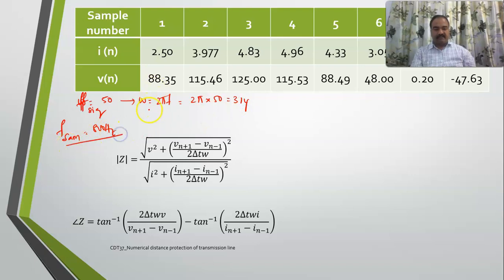If sampling frequency is given for us, we can determine delta t which is equal to 1 by fs, 1 by 800. We will get somewhere around 0.00125. This is delta t.